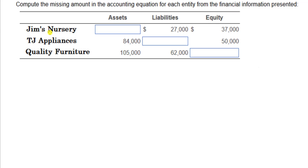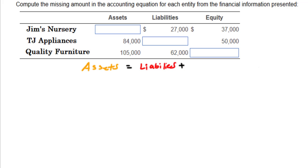We're given three different businesses, and for each business we know two of the three values of the accounting equation and are asked to compute the third. The accounting equation says that for any business at any point in time, the value of all its assets are claimed by all of the liabilities that business has at that moment, and the remaining amount the owners themselves claim — that's equity.